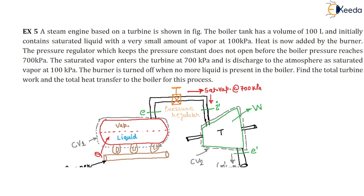During this process, we need to calculate the total turbine work and the heat transfer to the boiler. There is a burner supplying heat to the boiler, a pipeline with a pressure regulator, and when the regulator opens, steam flows into the turbine, strikes the blades to produce work, and remaining steam exits to the atmosphere. There are two control volumes in this problem.